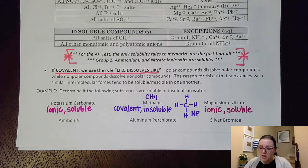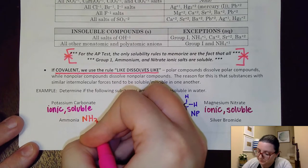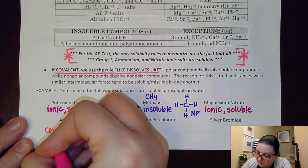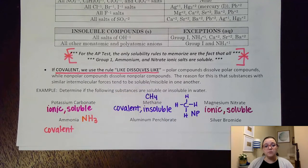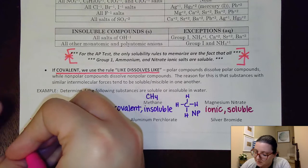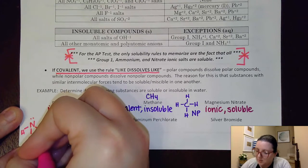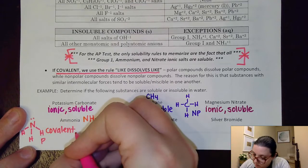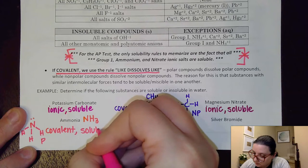Ammonia has the formula NH₃, so it is covalent. For covalent compounds I use 'like dissolves like,' so I need to know the polarity of ammonia. Drawing its structure, we can see ammonia is unsymmetrical and therefore polar. Since it is polar, it would be soluble in water.